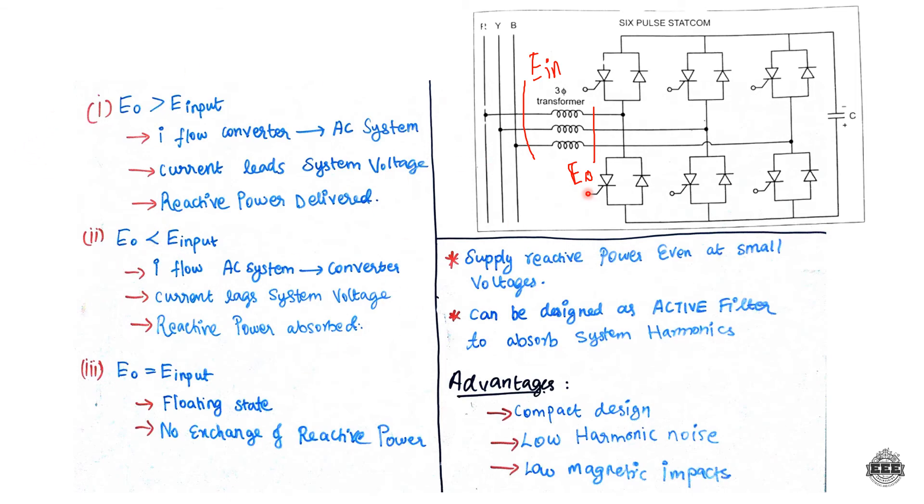Case 2: When E0 is less than Einput, current flows from the AC system to the converter. The current lags the voltage, so reactive power is absorbed by the STATCOM.